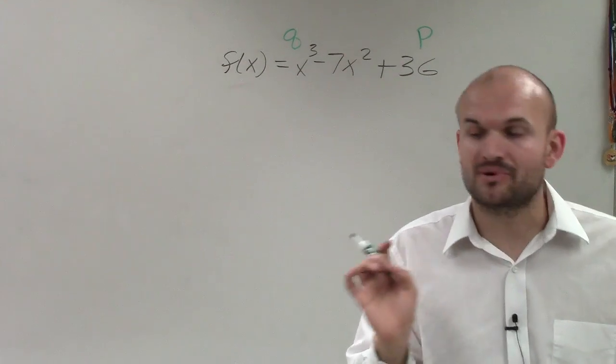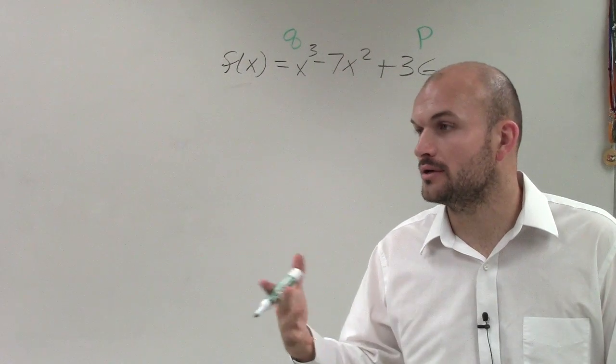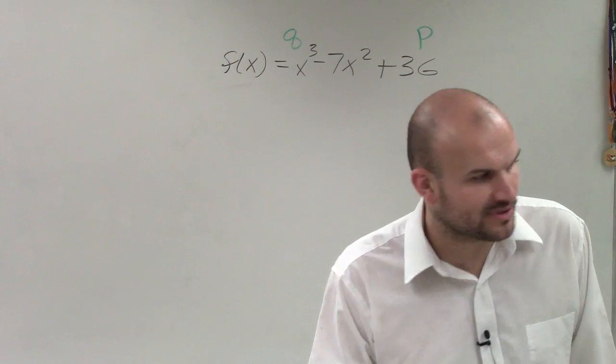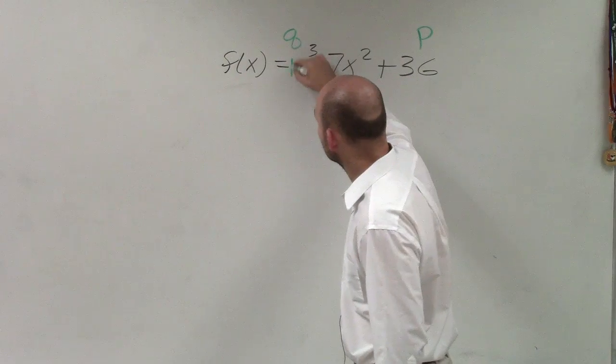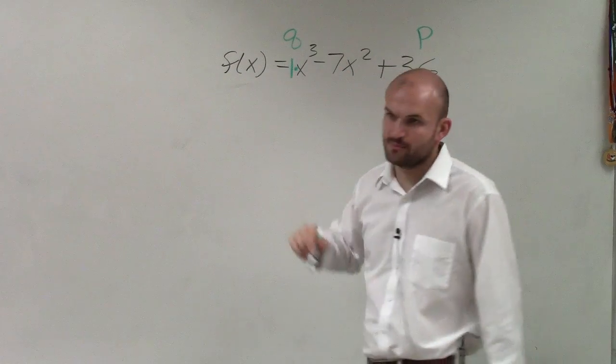p represents your constant. q represents the leading coefficient. Right now, we don't see a q, but we can say there's a number 1 right there, right?